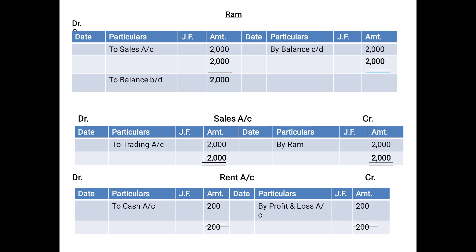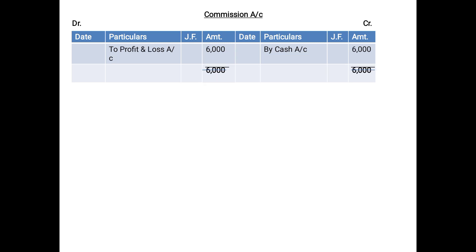For the RAM Account: debit side was 2,000, credit side was nil — so the amount is transferred by balance carried down and then shown as brought forward. For Sales Account, which is related to goods: the credit side had 'By RAM 2,000', so the entire amount is transferred to Trading Account on the debit side as 'To Trading Account 2,000'. For Rent Account (a nominal account): the debit side had 'To Cash Account 200', transferred as 'By Profit and Loss Account'. For Commission Account: the credit side had 'By Cash Account 6,000', transferred to Profit and Loss Account 6,000.